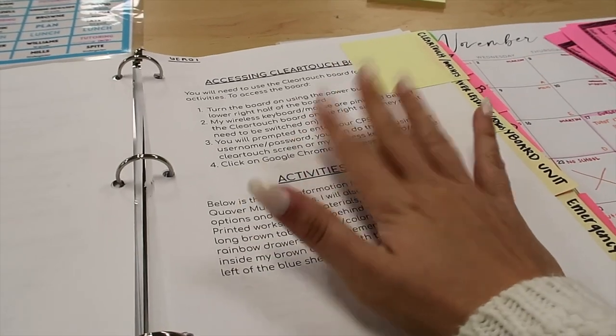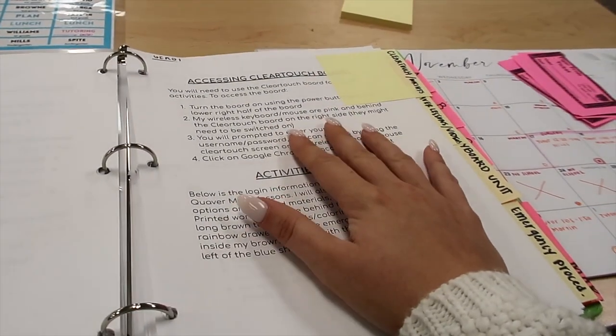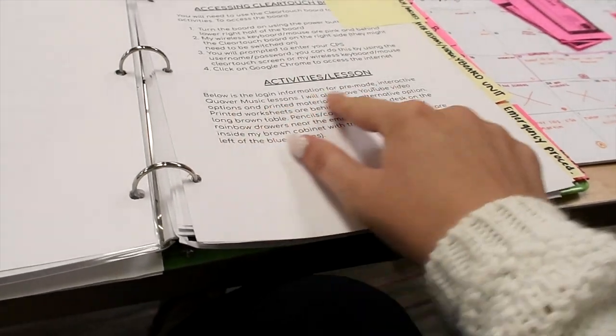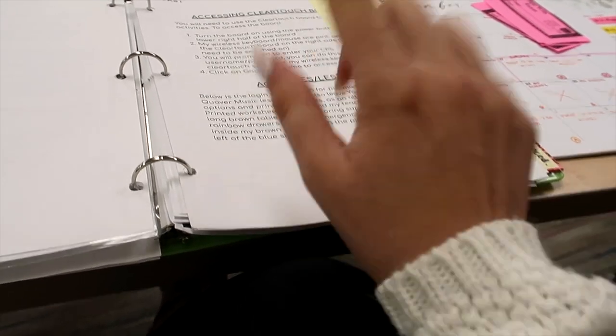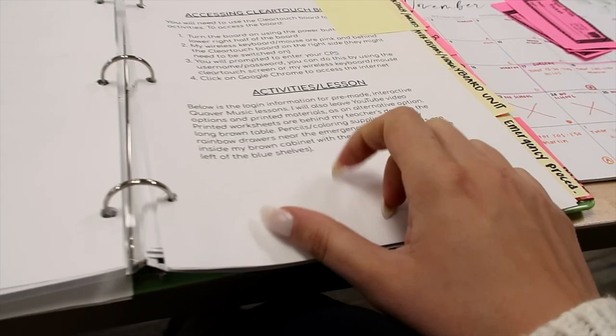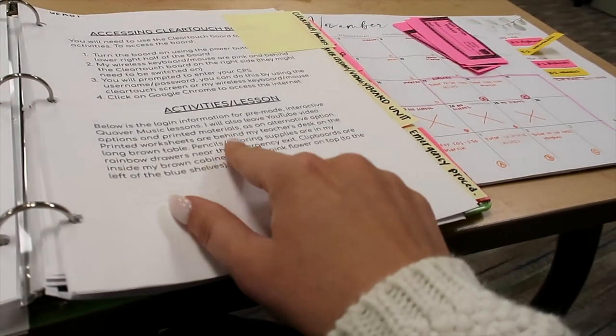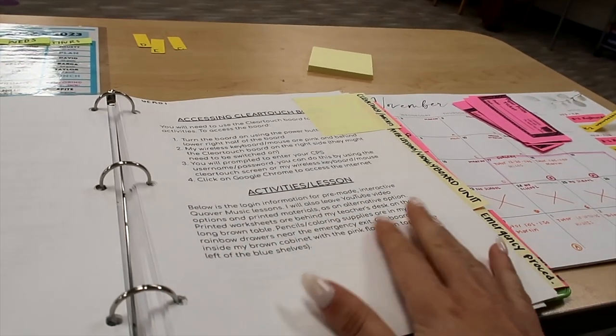So I have information about accessing my Clear Touch board because she'll want to use that for all the Quaver lessons and for some resources for the piano keyboard lesson too. And activities lesson I said below is the login information for pre-made interactive Quaver music lessons. It's on the next page, which I'm not going to show you obviously because I don't want you to log in my Quaver. But I said I'll also leave YouTube video options and printed materials as an alternative option. The printed materials were in those drawers.